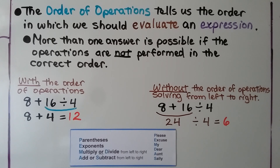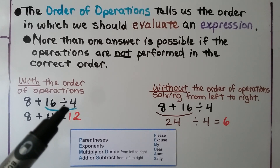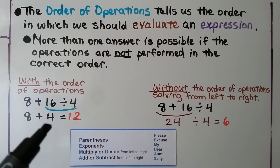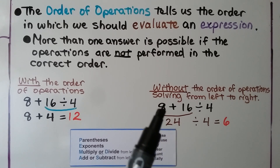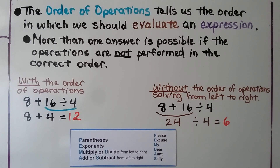The order of operations tells us the order in which we should evaluate an expression, and more than one answer is possible if operations are not performed in the correct order. With the order of operations: no parentheses, no exponents, so we go to multiply or divide. We see division and addition, so we divide first — 16 divided by 4 is 4. Then we add: 8 plus 4 equals 12. Without the order of operations, solving left to right, we might do 8 plus 16, which is 24, then divide by 4 to get 6 — a completely different answer.